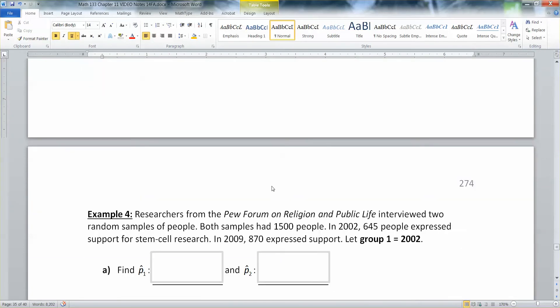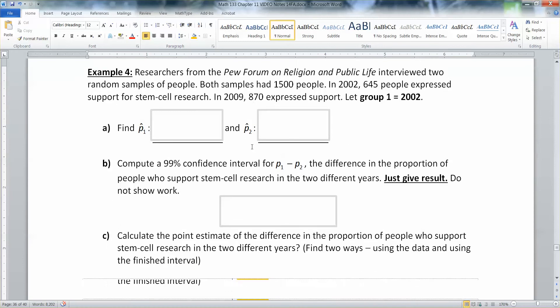So researchers from the Pew Forum on Religion and Public Life interviewed two random samples of people. Both samples had 1,500 people. In 2002, 645 people expressed support for stem cell research. In 2009, 870 expressed support. Let group 1 be 2002.